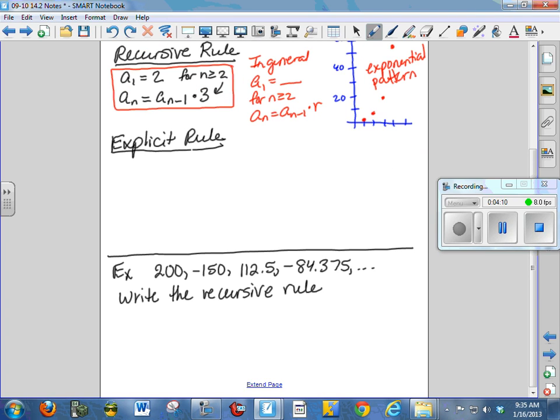To get the explicit rule, we look at a similar pattern. As we saw in the arithmetic, we recognize that a sub 1 is 2, a sub 2 is 2 times 3. A sub 3 is 2 times 3 times another 3. A sub 4 is 2 times 3, which is 6 times 3, which is 18 times 3, which is 54, etc. So a sub n is 2, and when I'm multiplying repeatedly, that's an exponent.